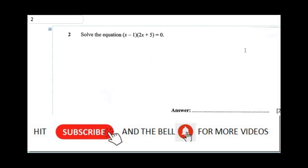The second question says solve the equation. When you have an equation (x - 1)(2x + 5) = 0, already looking at this equation, it's been simplified. So it's either you say x - 1 = 0 or you say 2x + 5 = 0.